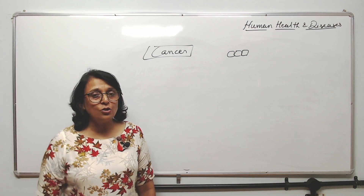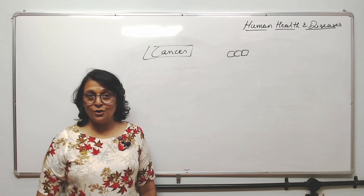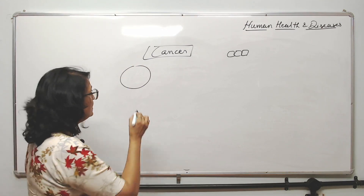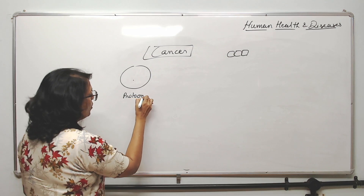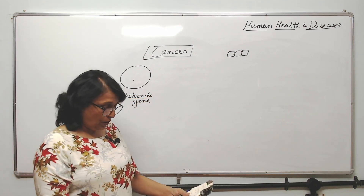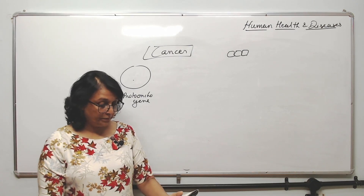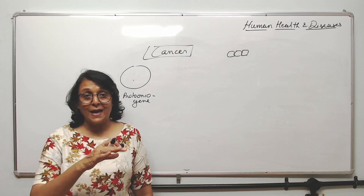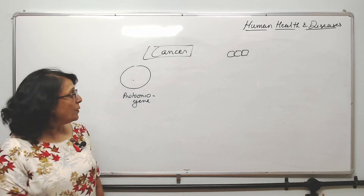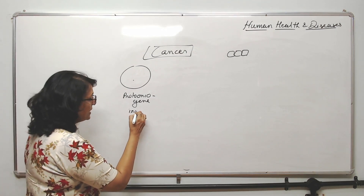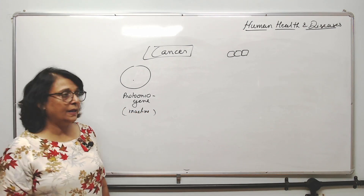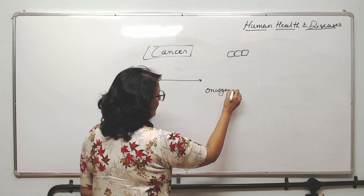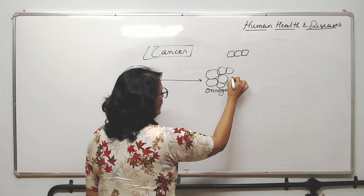Cells which divide in an uncontrolled manner have lost this contact inhibition control. In every cell we have a gene known as proto-oncogene. That is why doctors who treat cancer patients are called oncologists. This proto-oncogene is inactive. Anything which triggers this gene and converts it into an oncogene will cause the cell to divide uncontrollably.